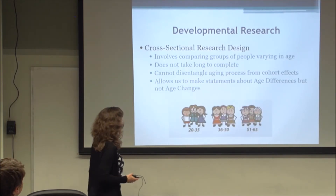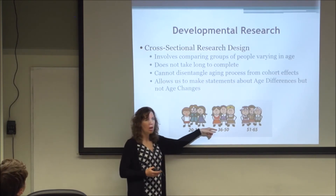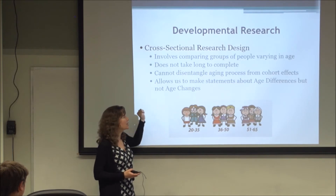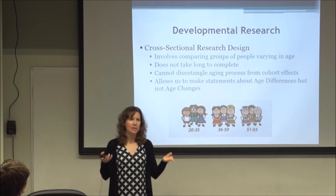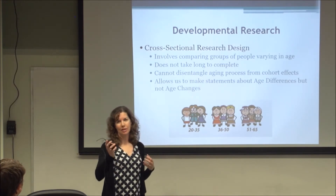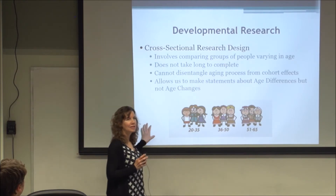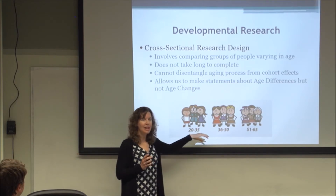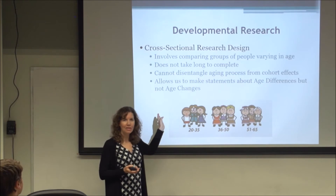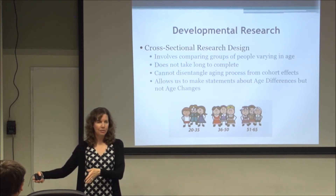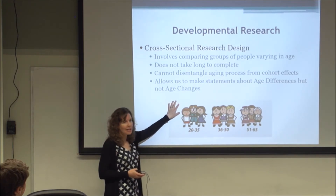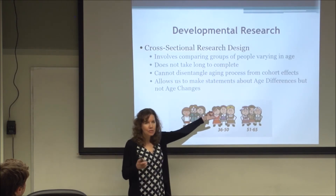With cross-sectional research — testing people of different ages all at the same time — a big confound is cohort effects. For instance, if I did a survey asking about music preferences and found that as people get older they tend to like Frank Sinatra more, did I really find an age effect? Probably not. That's a cohort effect: people living at different times have different preferences. In cross-sectional designs, we really can't say effects are due to age changes; we're looking at differences because of age.